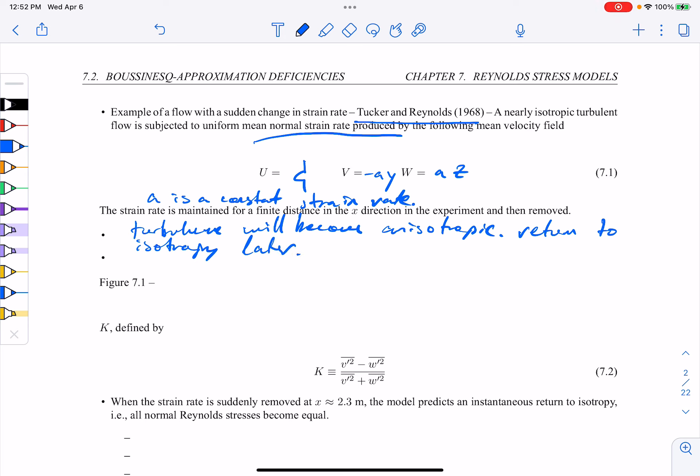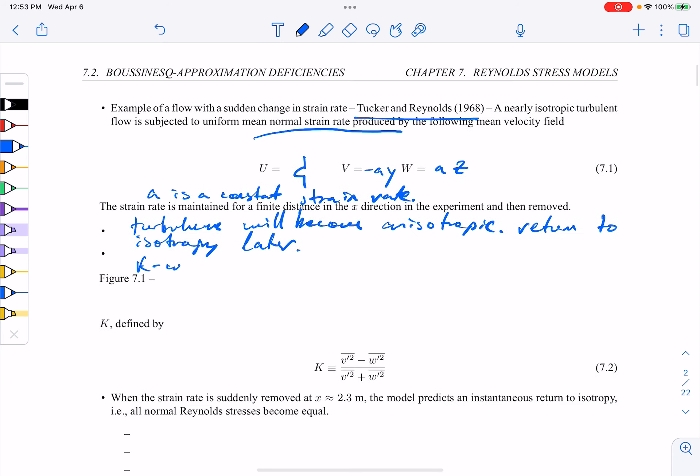And an example might be from one particular model of the k-omega-squared model of Wilcox and Rubison. And that was published in 1980. And in figure 7.1, we'll look at these comparisons by the so-called measured distortion parameter k.